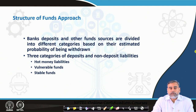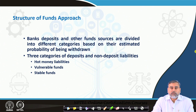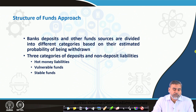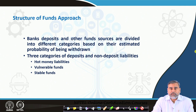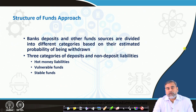Whenever banks decide on the basis of the probability of withdrawal from a particular account, there are three types of deposits and non-deposit liabilities. Banks categorize these deposits or liabilities on the basis of the probability of withdrawal: we have hot money liability, vulnerable funds, and stable funds. These three types are categorized based on the probability of withdrawal, and accordingly the bank calculates its liquidity requirements for that period.